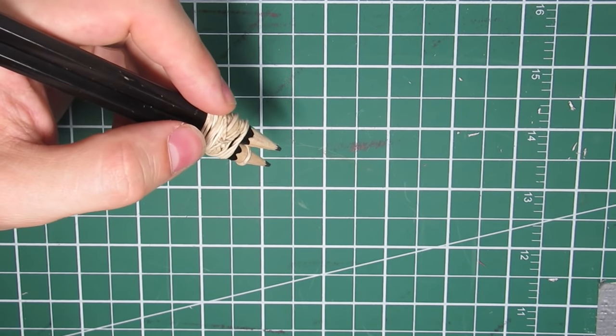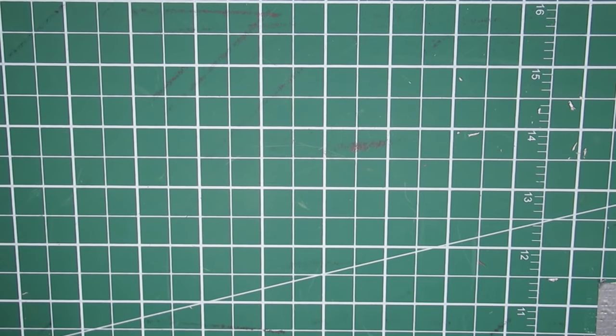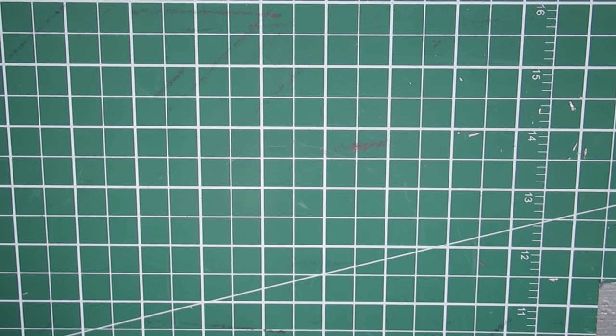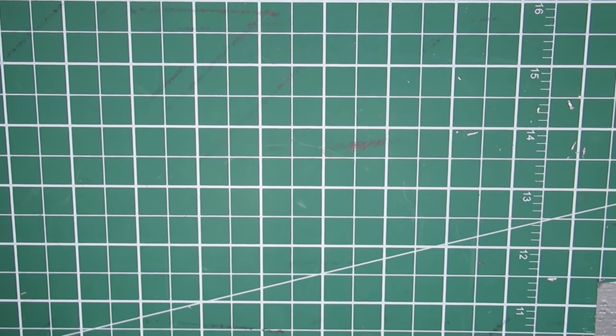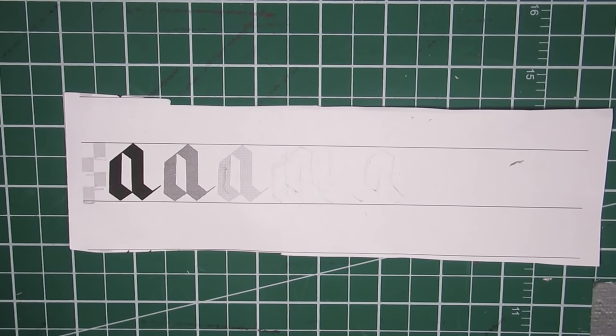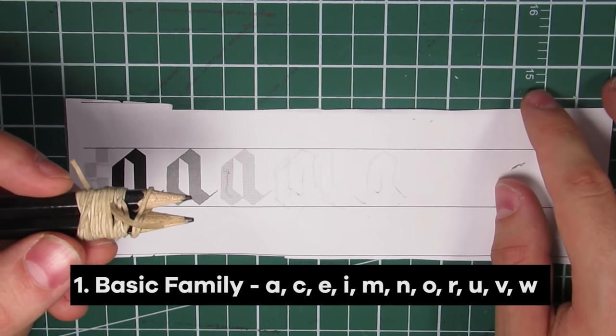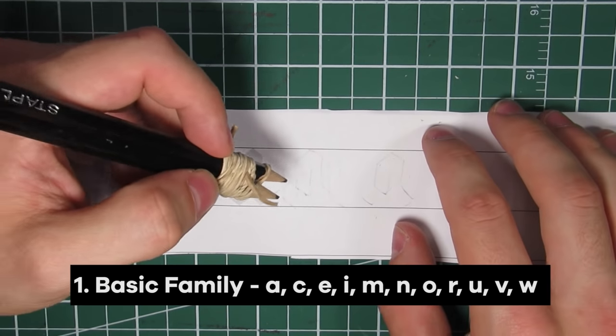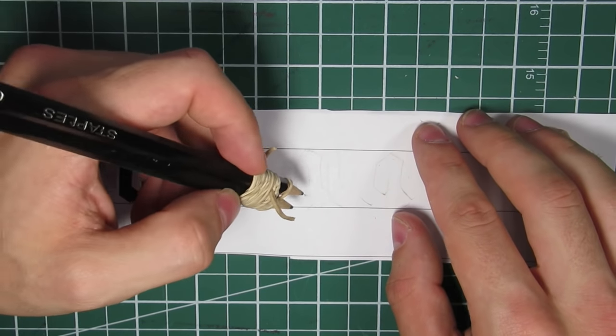So what we're going to do is do one letter from each family, as I call it, of letters. Starting with A, which is a basic letter.